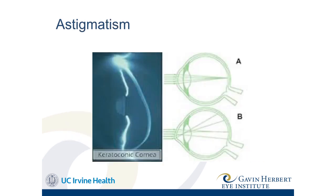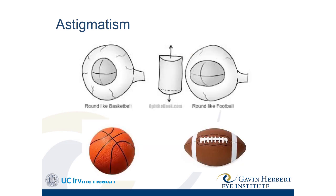From a clinical standpoint, one of the most difficult things to deal with is astigmatism. In a normal cornea, light rays focus exactly where they need to, perhaps needing a little help from glasses. But in a keratoconic eye, those light rays are going all over the place. Let's talk a little bit about astigmatism.